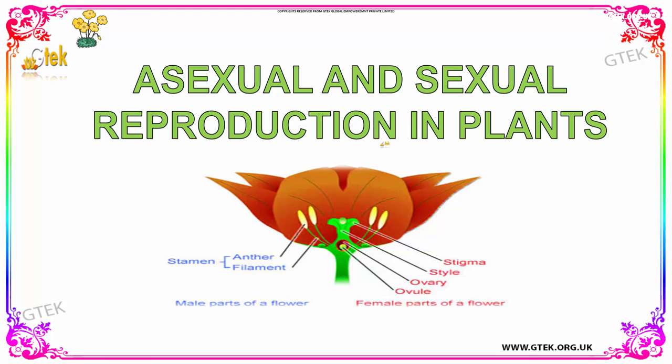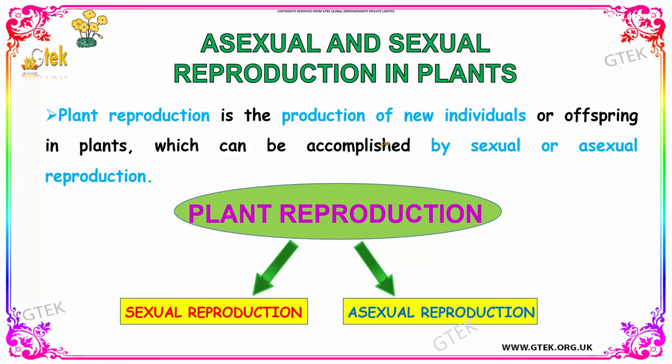Hi! Welcome to GTEx. Let us talk about Asexual and Sexual Reproduction in plants. What is meant by Reproduction in plants? It is nothing but the production of new individuals or offspring in plants, which can be accomplished by Sexual or Asexual Reproduction.